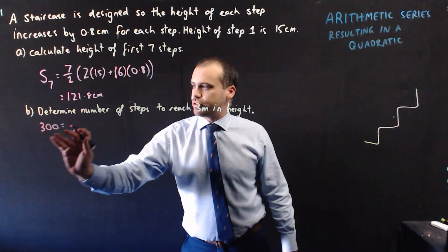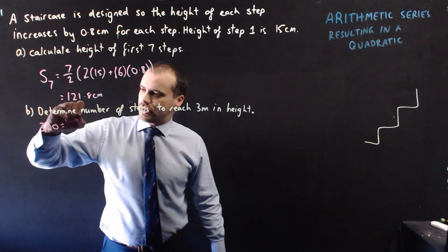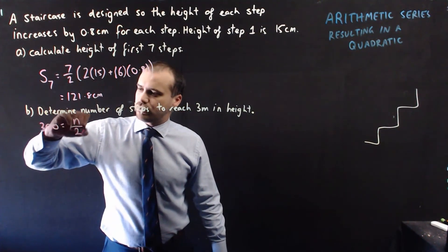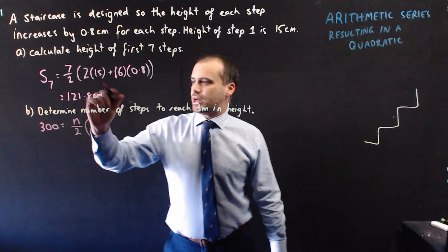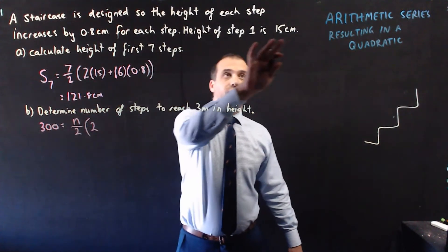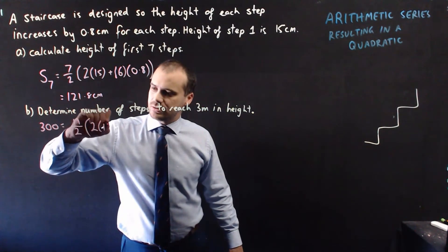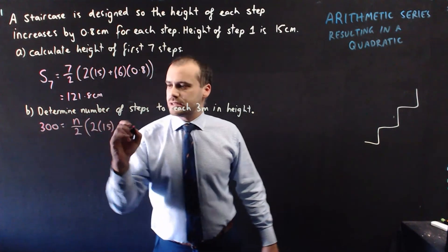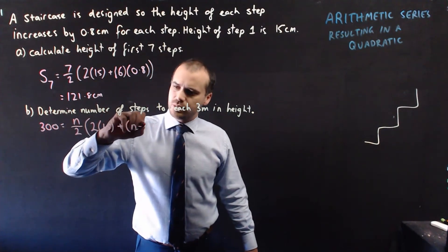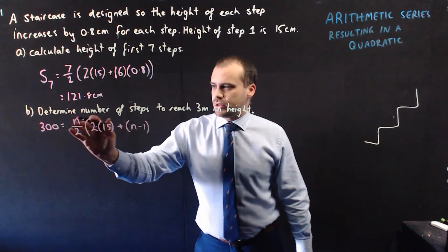Sum to 300 is equal to, so we've got this n on the top, which we don't know. That's the thing we're trying to find. And then we've got two times the first value, which is 15, plus, and then we get an n minus one. Okay, we don't know the n, we don't know the n.